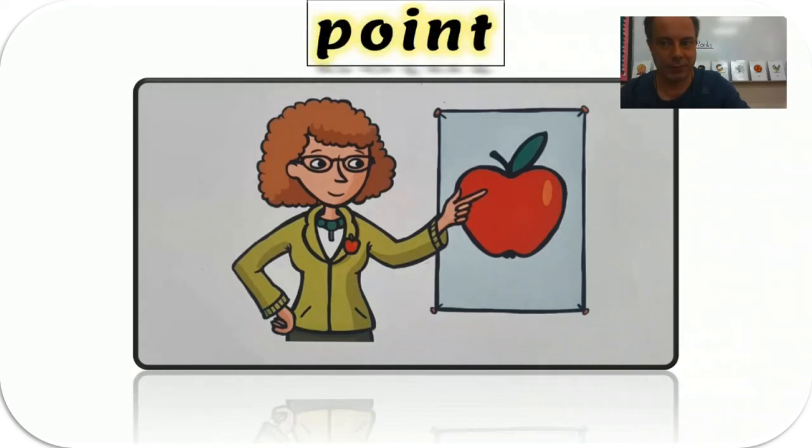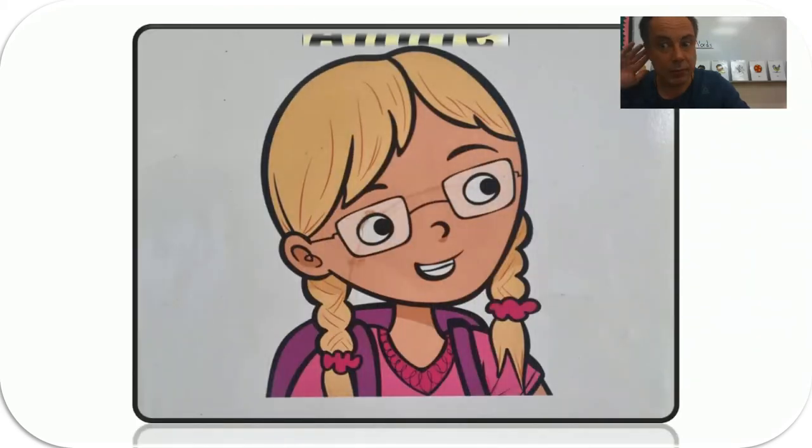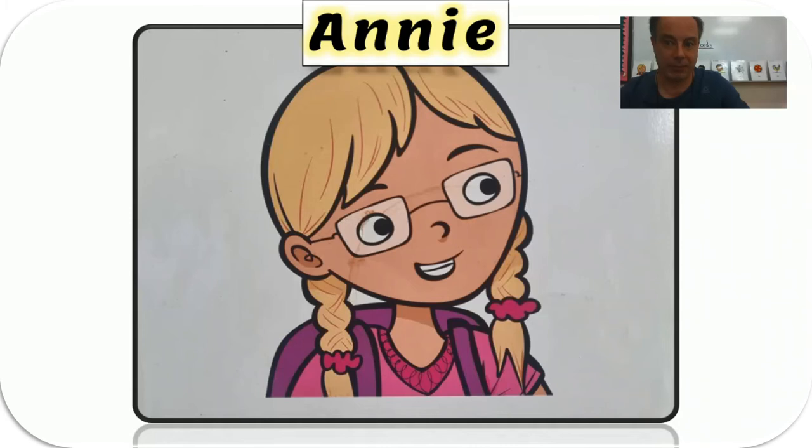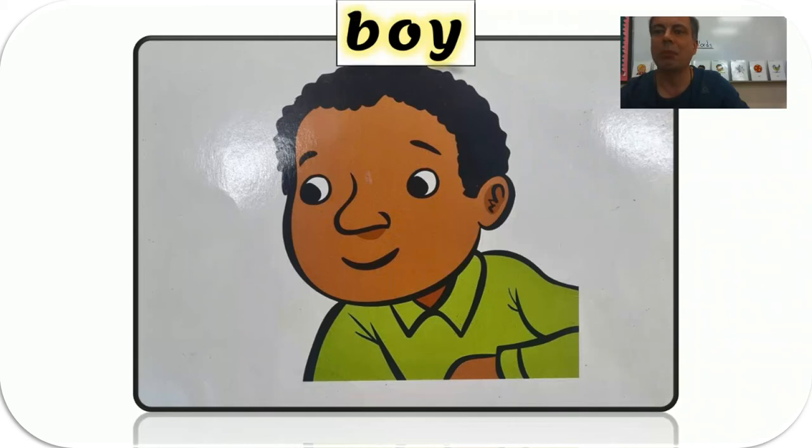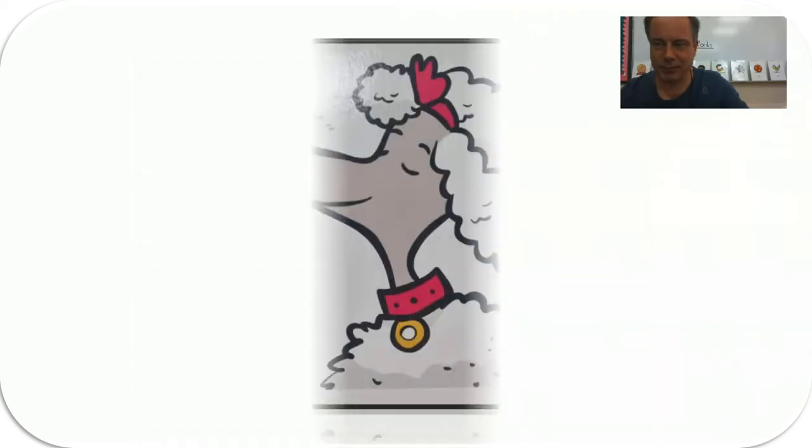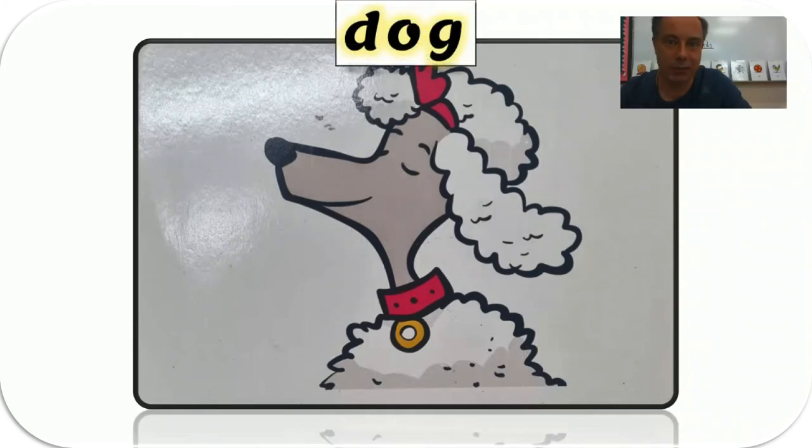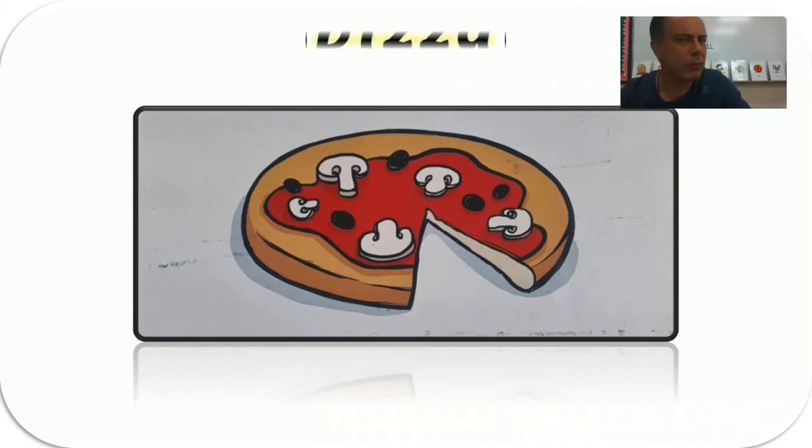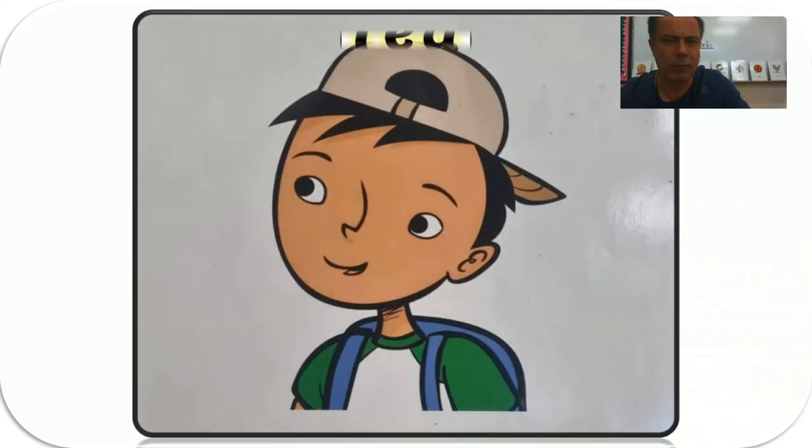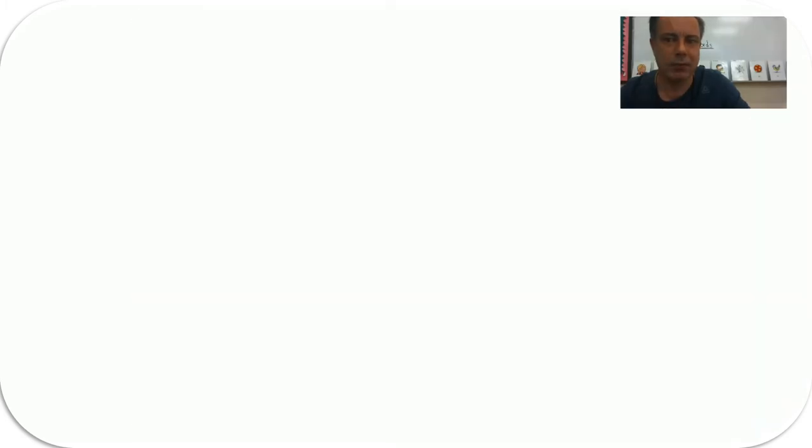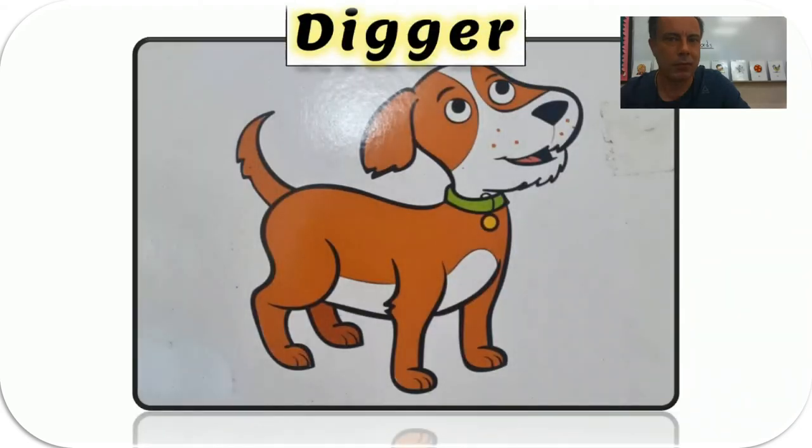Point. Annie. Boy. Dog. Pizza. Ball. Ted. Digger. And that's it. Okay.